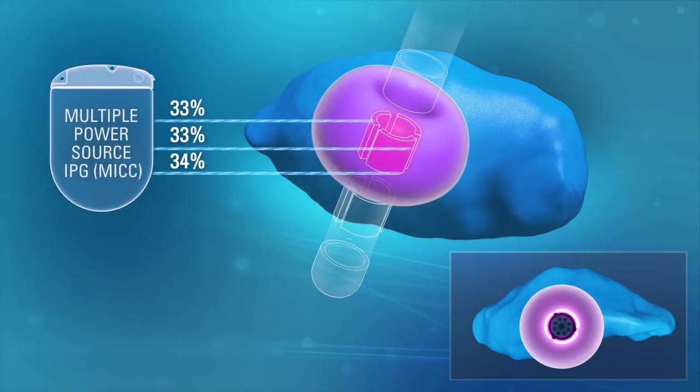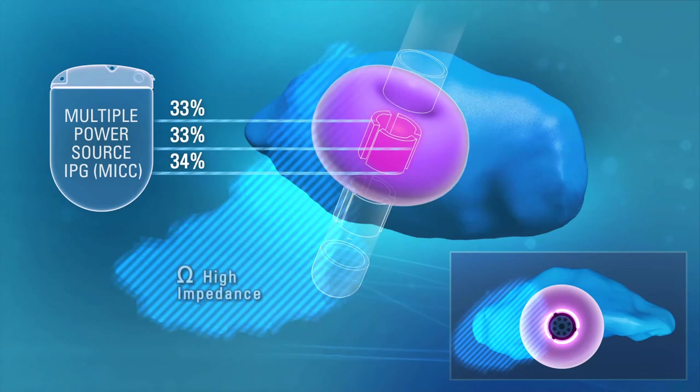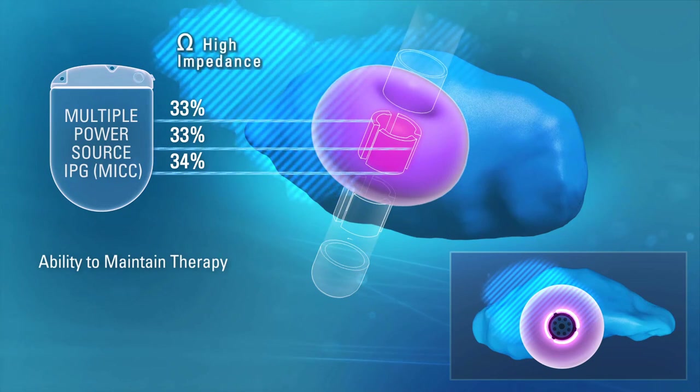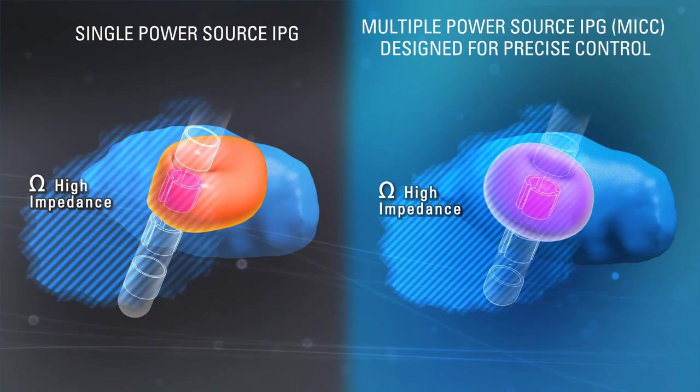Unlike single-source systems, the Versailles Cartesia Directional Lead is powered by a multiple-source IPG, where each and every contact has its own power source, allowing for precise control of stimulation at each contact, so that what is specified is the actual stimulation delivered and maintained. Ring-mode stimulation is achievable.